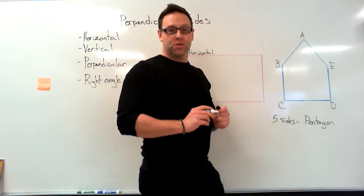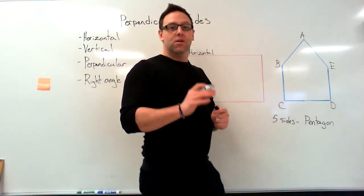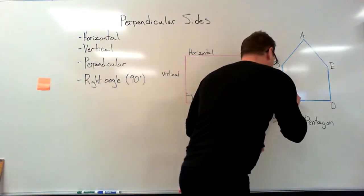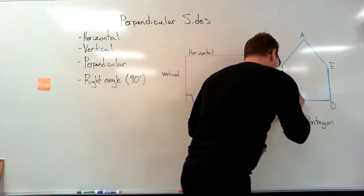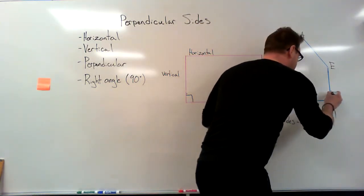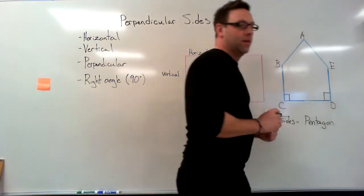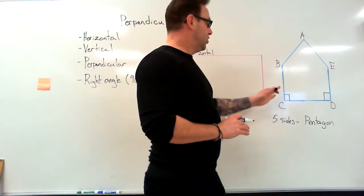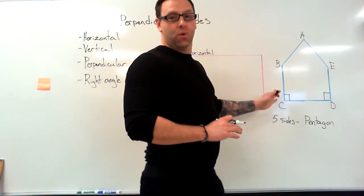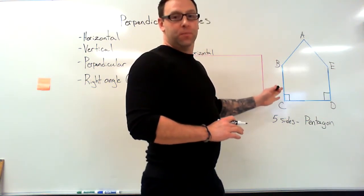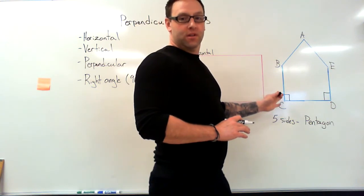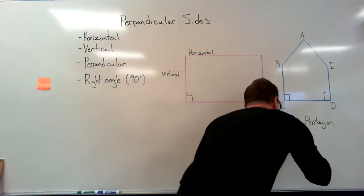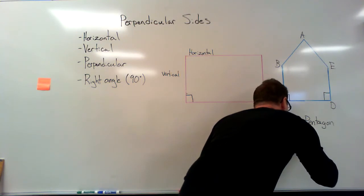How many perpendicular sides do we have in this shape? Well, we've got two different sets. Let's show those sides using the square that we talked about earlier. There — now we have shown our two square perpendicular right angles in this shape.